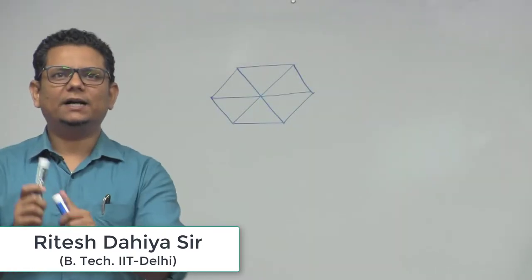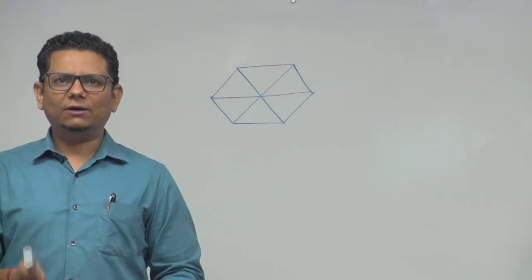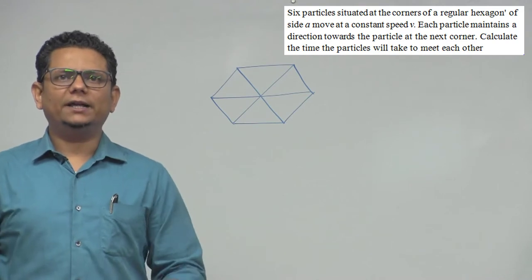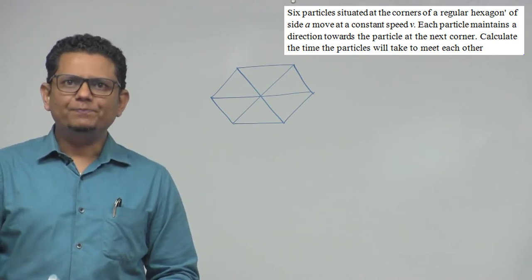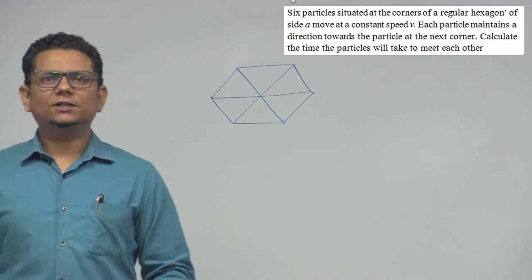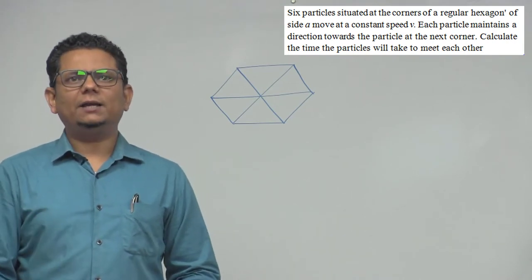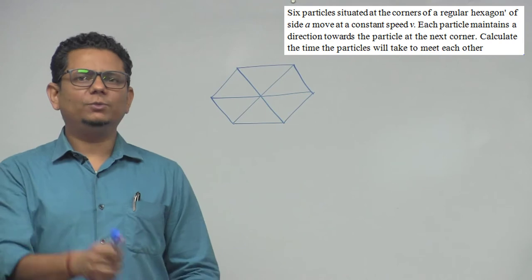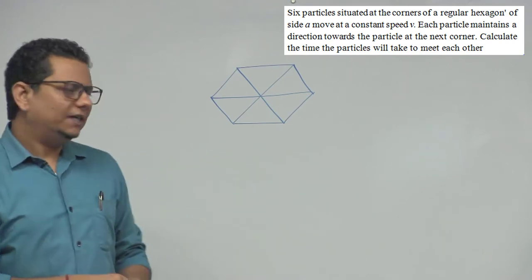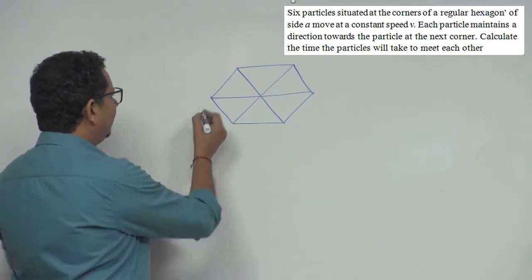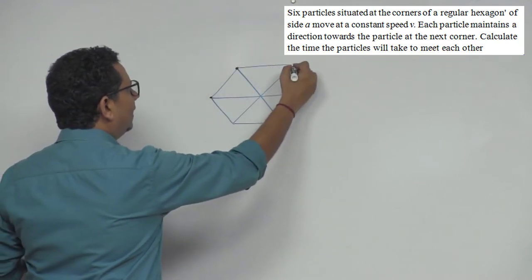The question says six particles are situated at the corners of a regular hexagon of side a, moving at a constant speed V. Each particle maintains a direction towards the particle at the next corner. So what is the time a particle will take to meet each other? Now this is an interesting situation here.